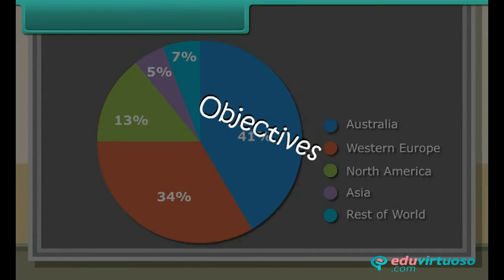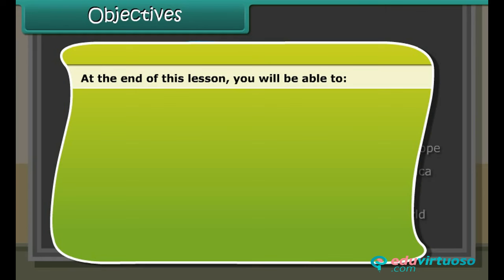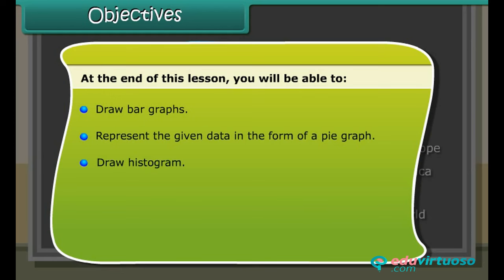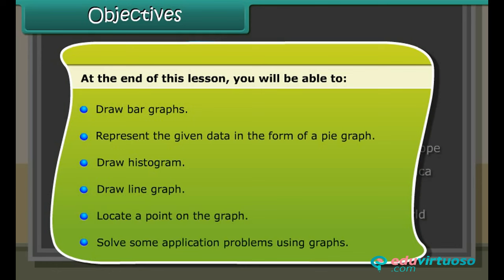Objectives: At the end of this lesson you will be able to draw bar graphs, represent the given data in the form of a pie graph, draw histogram, draw line graph, locate a point on the graph, and solve some application problems using graphs.